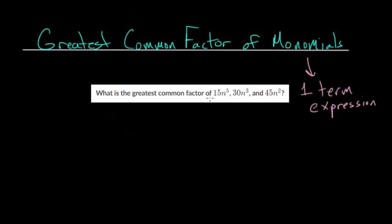When you're doing these problems, you really want to think about the numbers and the variables separately. The variables tend to be simpler or more straightforward, since you can look at these where we have n to the fifth, n to the third, and n squared.